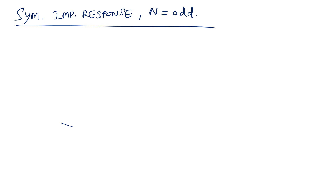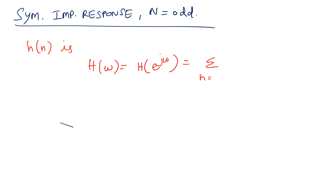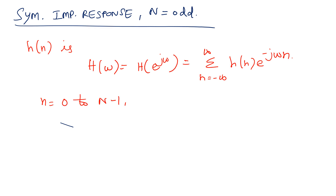We know that the Fourier transform of h(n) — that is H(ω), which equals H(e^jω) — is the summation from minus infinity to plus infinity of h(n) e^(-jωn). Here the impulse response of the filter has only N samples, so the limits of the summation can be changed from n equal to 0 to N minus 1.